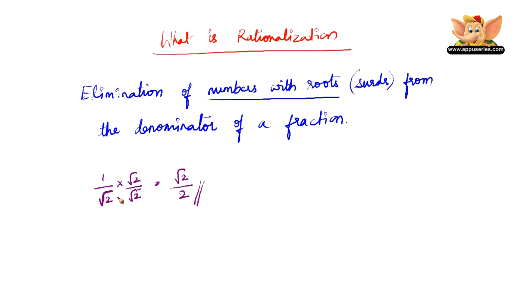So here we have eliminated a surd or a number with root from the denominator and hence we have rationalized 1 by root 2. So simple it is.